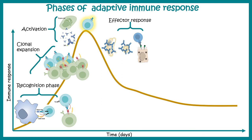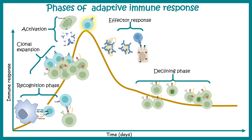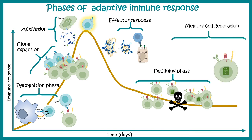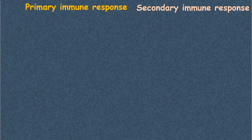After the pathogen is eliminated, the elevated levels of antibodies and activated T cells could become harmful, so most of them die — this is the declining phase. However, some cells do not die and instead form memory cells. There are several hypotheses and controversies around how memory cells are generated, which are covered in a separate video.